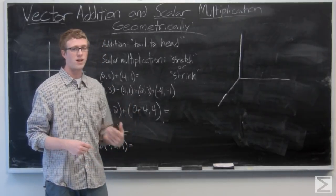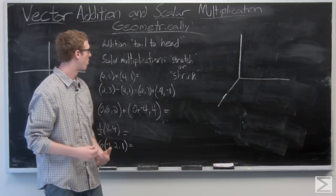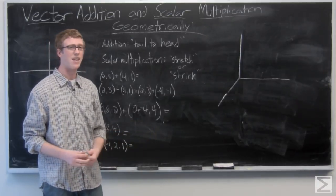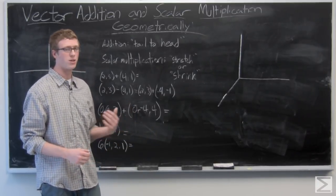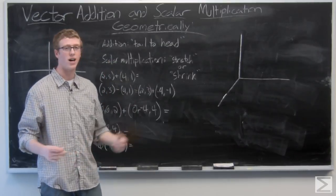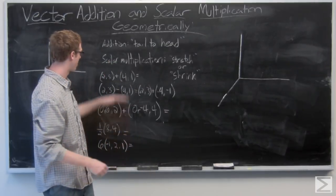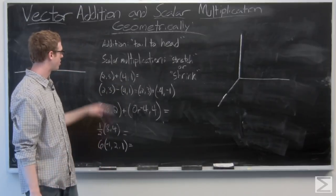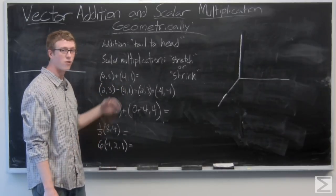When we look at vector addition, we're going to be adding vectors component-wise. When we add them geometrically on the plane, we're adding tail to head. Let's immediately check out an example. We have the vector (2, 3) plus the vector (4, 1). The result, adding component-wise, is (6, 4).